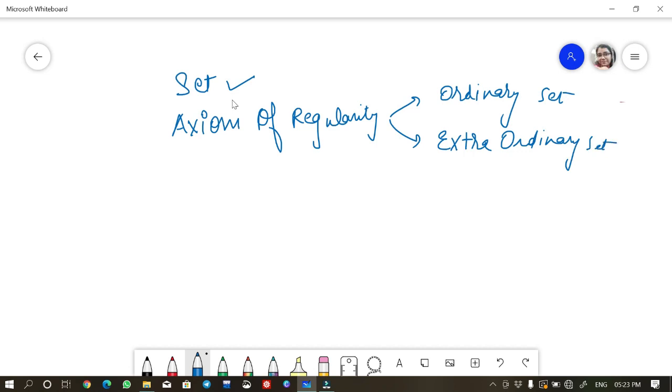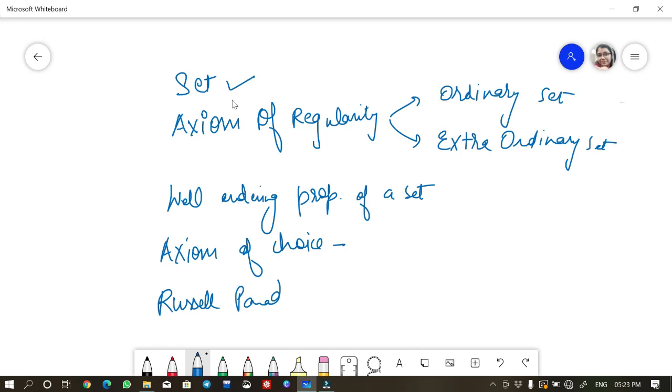The next we discussed about well-ordering property of a set. And then we discussed about axiom of choice. After axiom of choice, we discussed about the Russell paradox. These are the axioms that we use in the set theory.